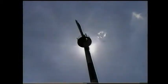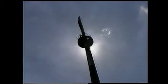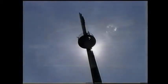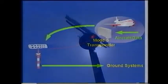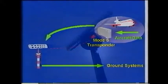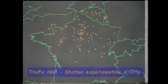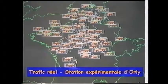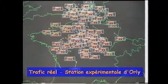Le moyen de communication utilisé dans le volet trafic réel et émulé dans le volet simulation est le mode S, amélioration du radar classique normalisé par l'Organisation de l'Aviation Civile Internationale. Son utilisation pour la transmission de paramètres bord fait déjà l'objet d'une circulaire aéronautique Eurocontrol, préalable à une installation obligatoire à bord des avions à partir de 2001.